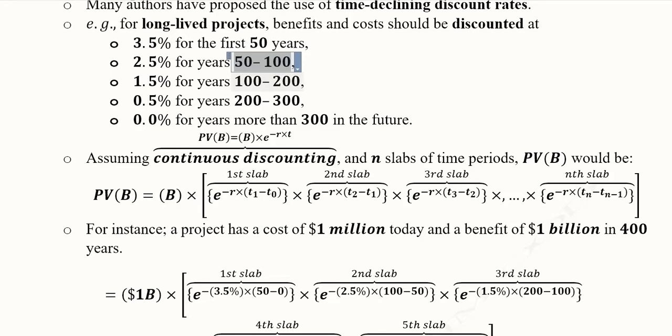For example, here you can see 50 years are clubbed together, here again 50 years, and here 100 years are clubbed together, and then 100 years, and then remaining years. So it's suitable to choose the discounting in the mode of continuous.